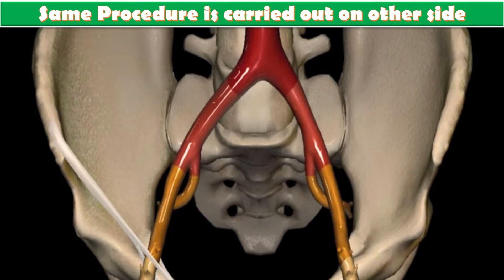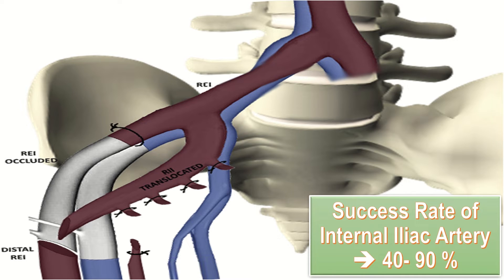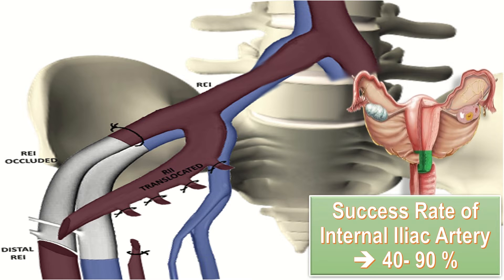The same procedure is carried out on the other side. The success rates with internal iliac artery ligation are variable, ranging from 40 to 90%. Internal iliac artery ligation is a suitable procedure for bleeding from the lower uterine segment, cervix, broad ligament, vagina, and paravaginal areas.